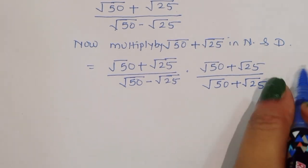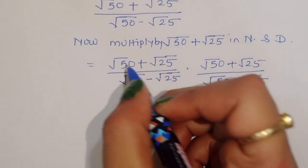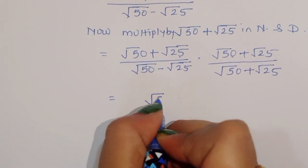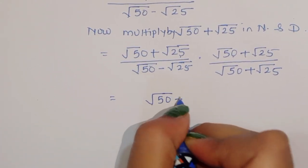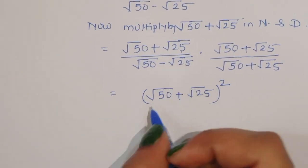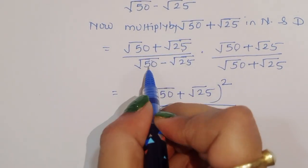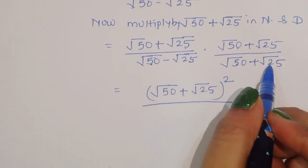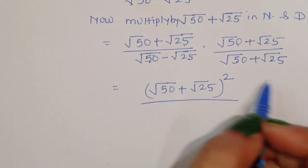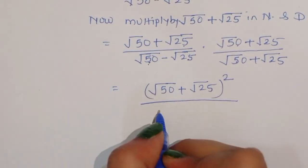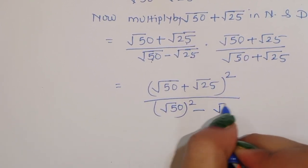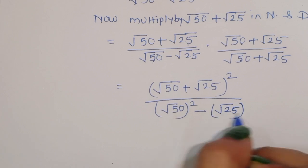The numerator is (√50 + √25)², which is (a + b)². The denominator is (√50 - √25)(√50 + √25), which is (a - b)(a + b) = a² - b², so we get (√50)² - (√25)², which is 50 minus 25.